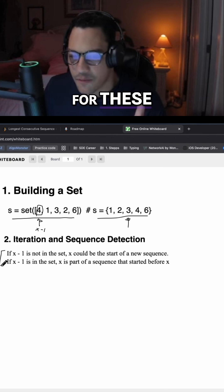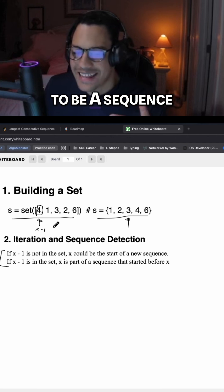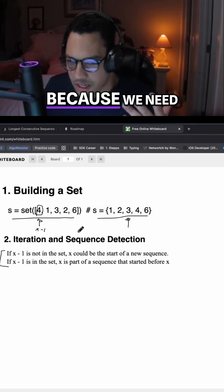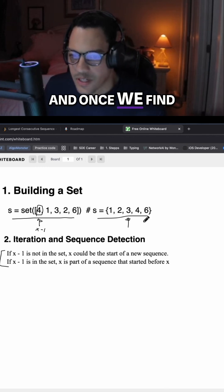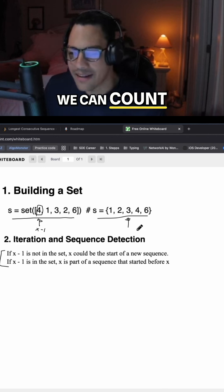The reason we're checking for these conditions is because we need x to be a sequence starter. We need to count how long this sequence is, and once we find the starting point of that sequence, we can count upwards or in ascending order.